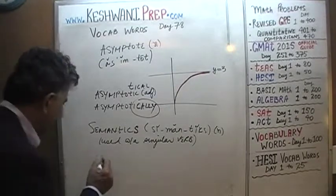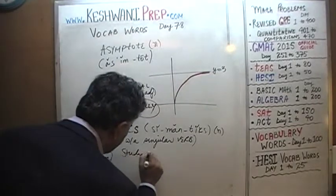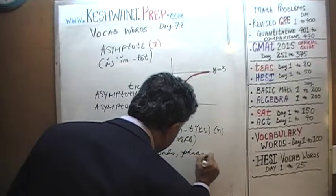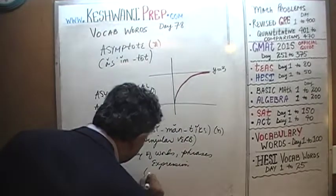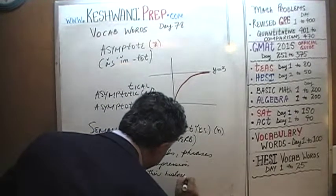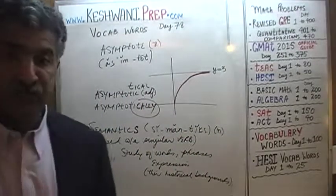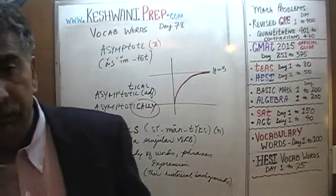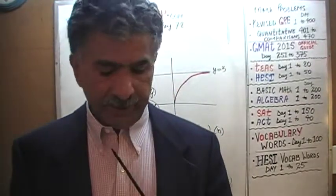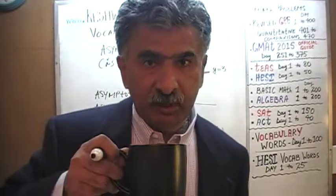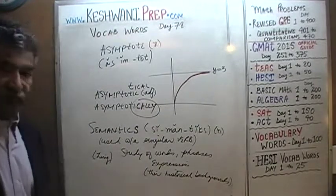It's a term from linguistics. Semantics simply means the study of words, phrases, and expressions, and their historical backgrounds. These expressions in any language must have originated somewhere, somehow, by someone. Linguists study just that, and in linguistics the branch that studies the origin of expressions and words is called semantics. Keep in mind it is to be used with a singular verb, even though it ends with an S.